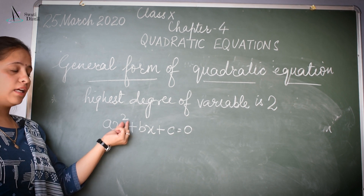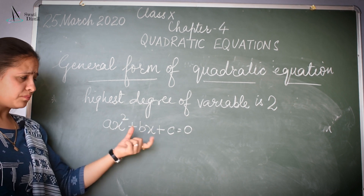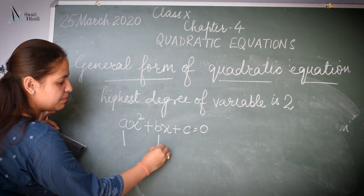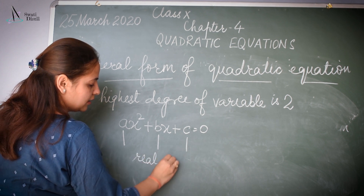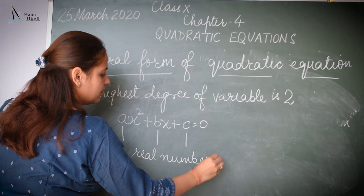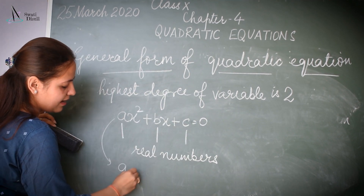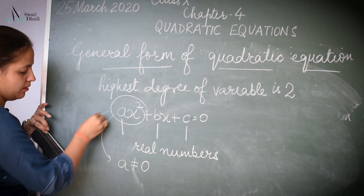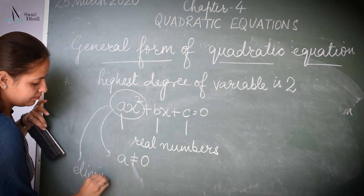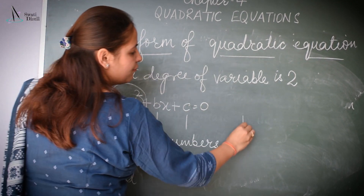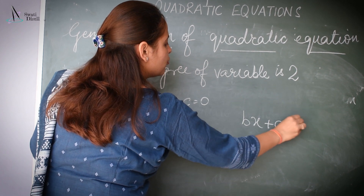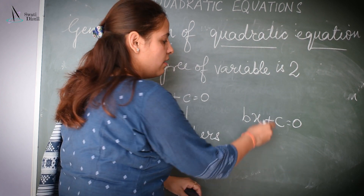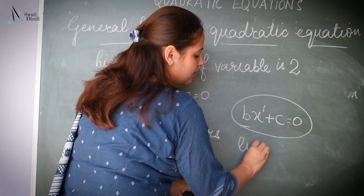Here the highest degree of the variable X is 2. This is the general form of quadratic equation where A, B, and C are real numbers. A can never be equal to 0, because if A becomes 0, this term gets eliminated and you are left with BX + C = 0, where the highest degree of variable X is 1, so this becomes a linear equation.